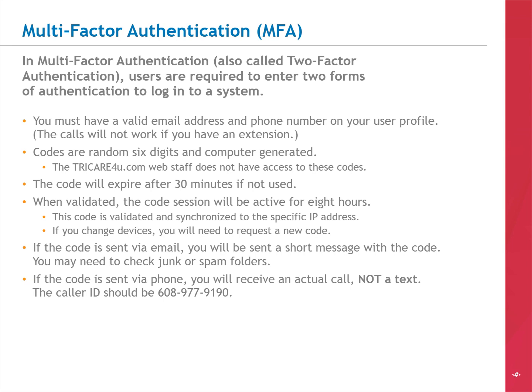If the code is sent via email, you will receive a short message with the six-digit number. You may need to check junk or spam folders. If the code is sent via phone, you will receive an actual call, not a text. The caller ID should be 608-977-9190.